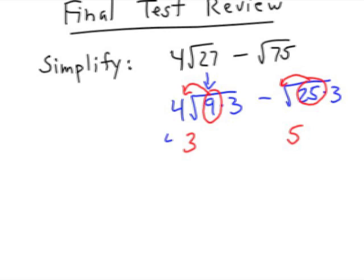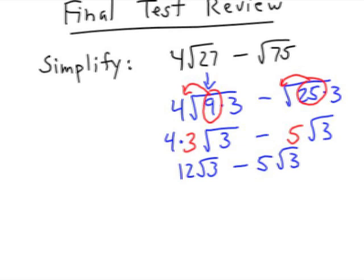Now what we have is 4 times 3 on the outside of the radical times radical 3. On the other part, we have 5 radical 3. This is of course 12 radical 3 minus 5 radical 3. Can you actually subtract those?